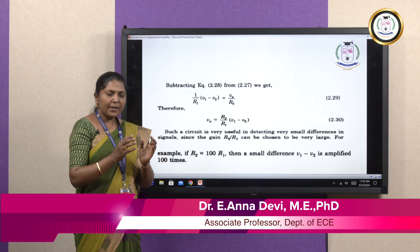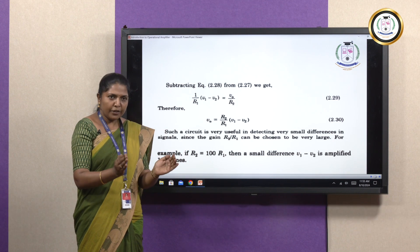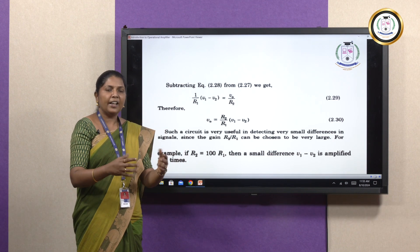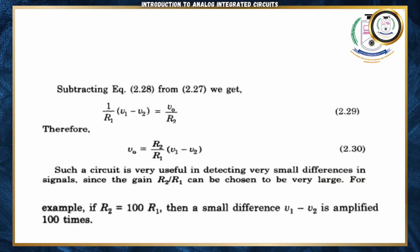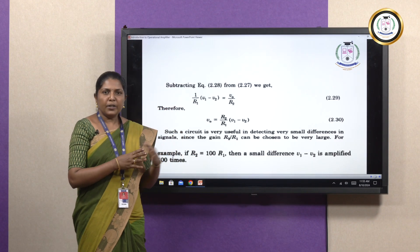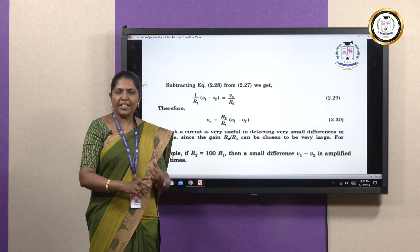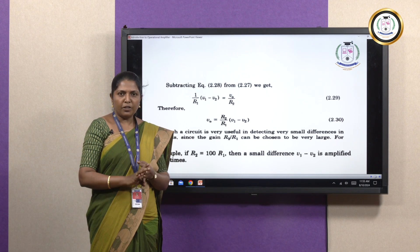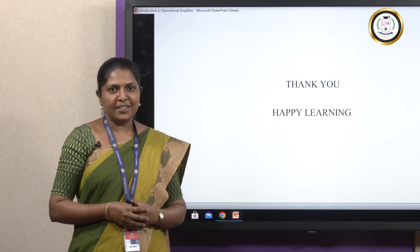This kind of differential amplifier is useful when the difference between signals is very small and cannot be measured directly. In that case, you can use a differential amplifier to find the difference, amplify it, and use it for your application. For example, if R2 = 100 × R1, the smaller signal can be amplified by a factor of 100. This is called a differential amplifier. In this video, we have understood the basic operation of an operational amplifier, inverting amplifier, non-inverting amplifier, and differential amplifier. Thank you. Happy learning.